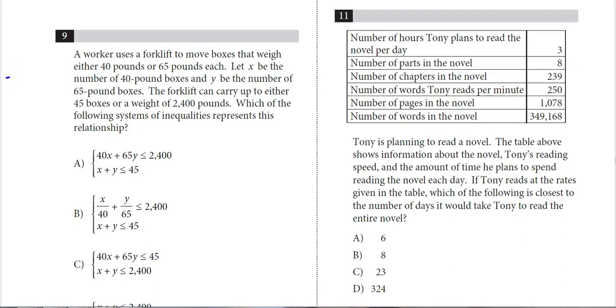All right, number 11. I have a table here with a bunch of numbers, hopefully we don't need all of those. It says Tony's planning to read a novel. The table above shows information, his reading speed, which is going to be important, the amount of time he's going to spend each day, amount of time per day.